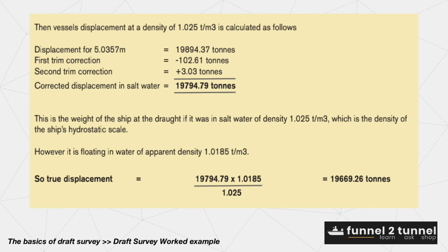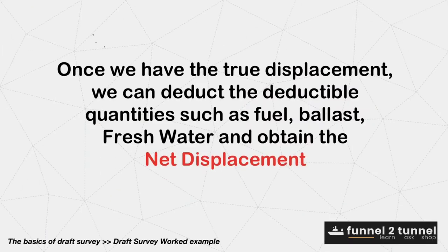The fourth correction is the density correction, which applies when the ship is floating in water with a density other than 1.025. So we have obtained the true displacement of the ship for a density of 1.0185. Once we have the true displacement, we can deduct the deductibles such as fuel, fresh water, ballast water, etc., and obtain the net displacement.